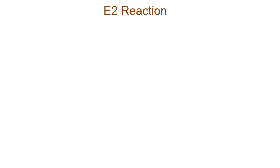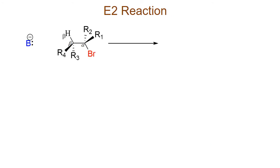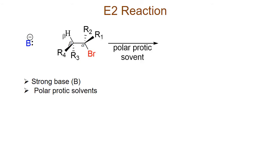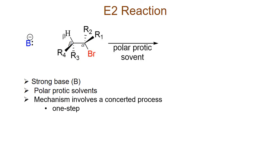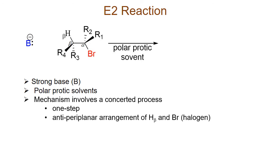An E2 reaction is the reaction between an alkyl halide and a base. The base in this reaction is usually a strong base and the reaction is facilitated in polar protic solvents. The mechanism of an E2 reaction again involves a concerted process where all bond forming and bond breaking events take place in one step. The transition state leading to the product in an E2 reaction requires an anti-periplanar arrangement between the beta hydrogen and the leaving group, which is the halogen.